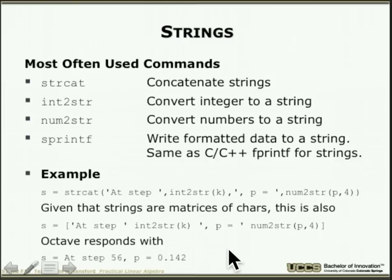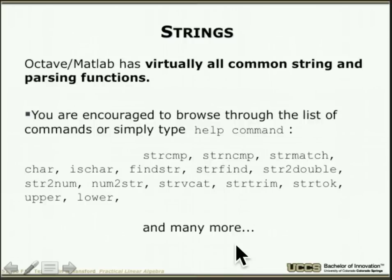Strings are a special kind of matrix. You can concatenate them, convert to integers or numbers, and pretty-print them. MATLAB and Octave support sprintf/fprintf syntax for combining values into strings, much like C. Common string functions available include: strcmp (string compare), strtok, upper, lower, and many more. If you're used to C/C++ string functions, most carry over directly.